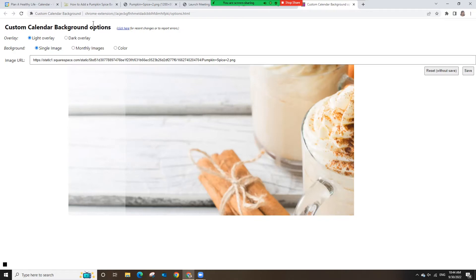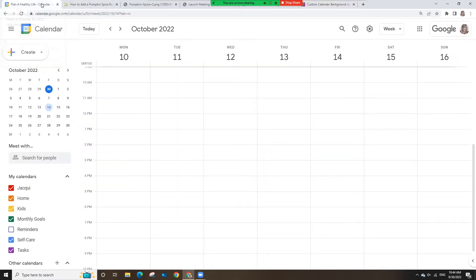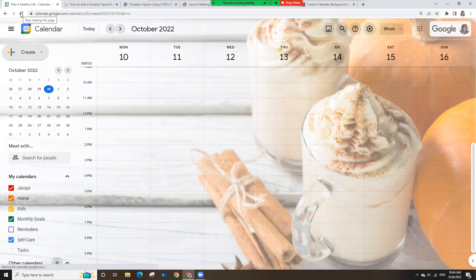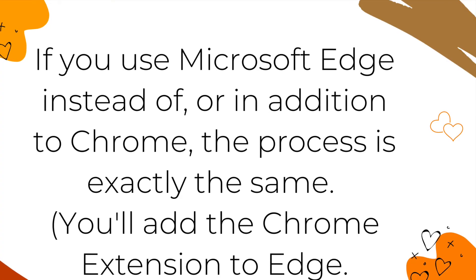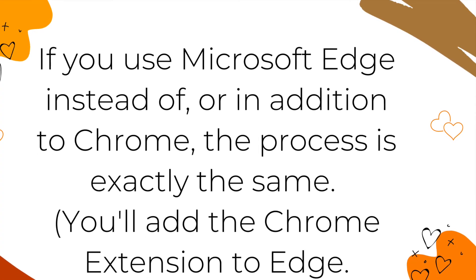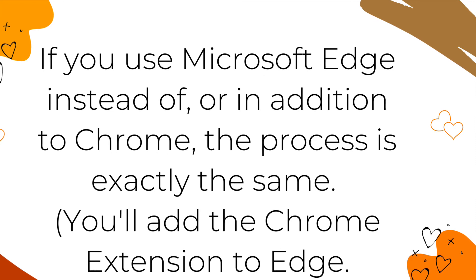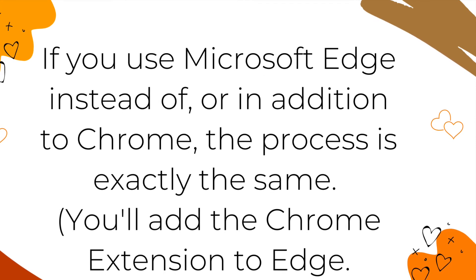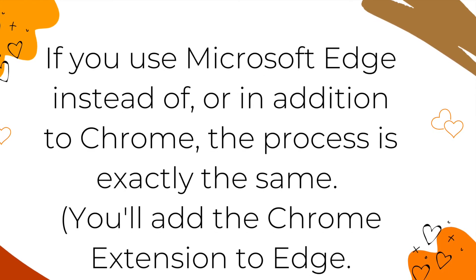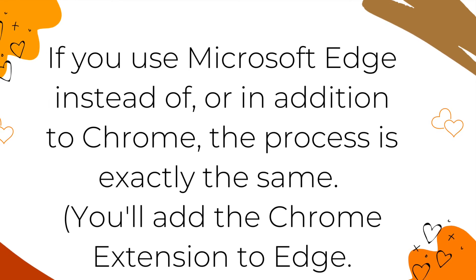Go back to Google Calendar and refresh to see the pumpkin spice background. If you use Microsoft Edge to view your Google Calendar, the process is exactly the same, because Edge now allows you to install Chrome extensions. So add the Custom Calendar Background extension to Edge and follow the same instructions.